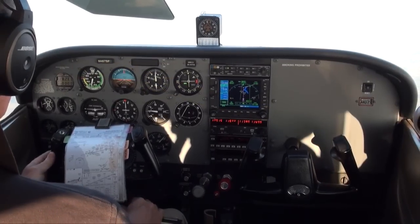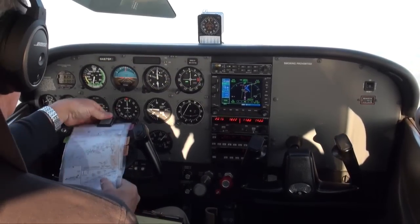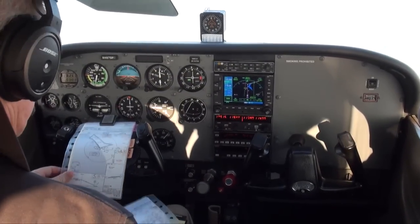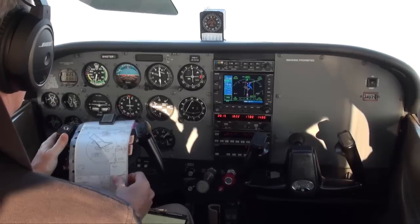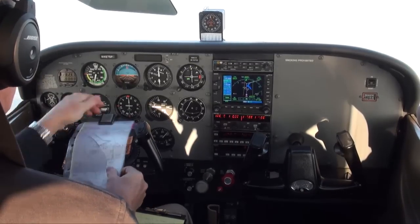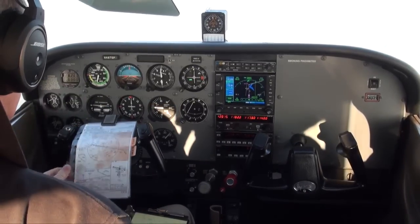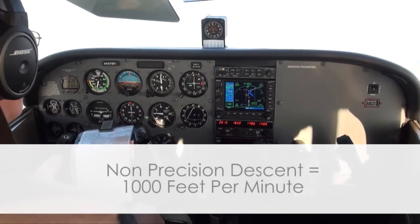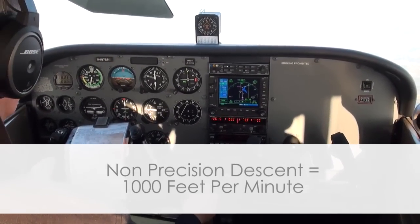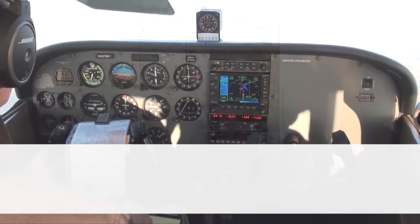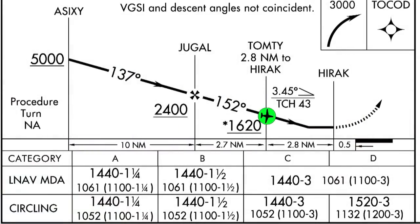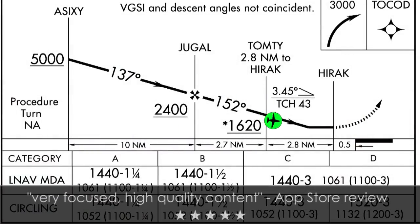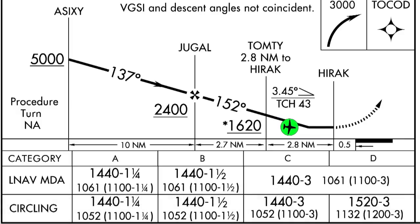The best way to fly the LNAV plus V approach is to treat the glide slope like it wasn't there, and fly it as you would any step-down approach, by simply descending to the next step-down altitude at a rate of approximately a thousand feet per minute. Using this procedure, when you arrive at the last step-down altitude before the missed approach point, you will have time to look for the runway and decide if there is the required visibility to land.